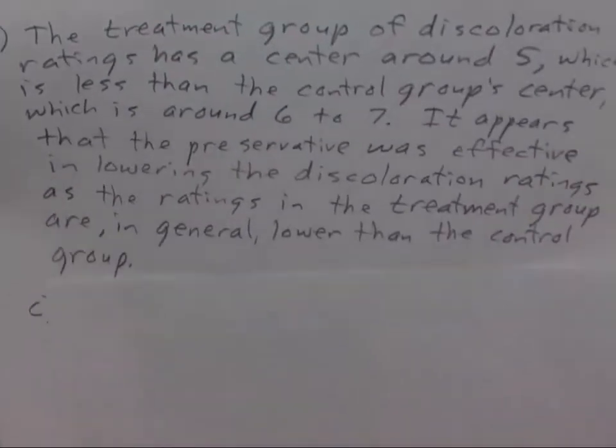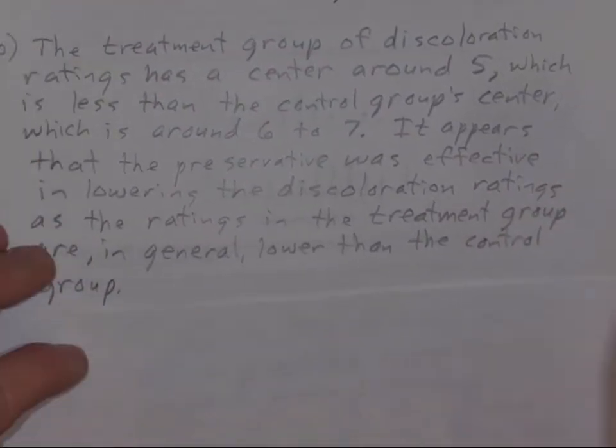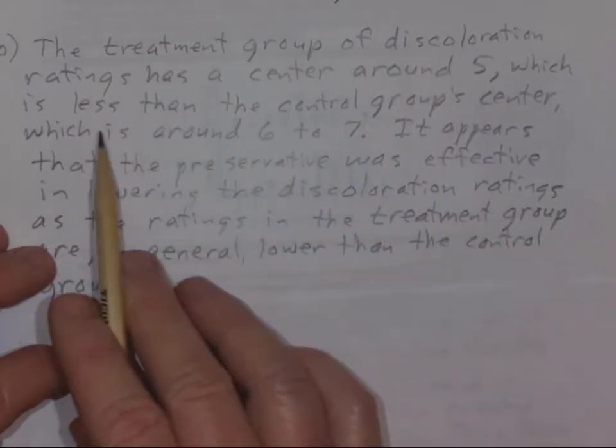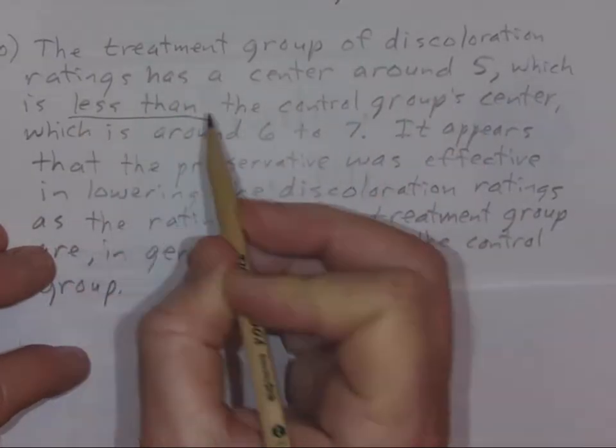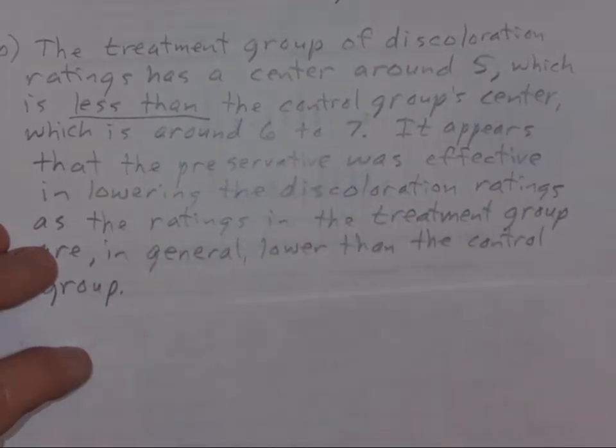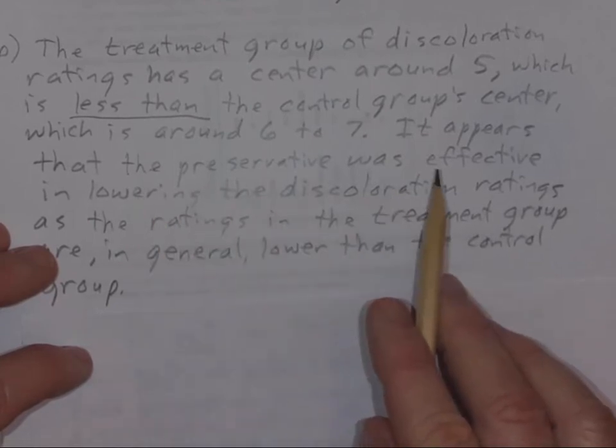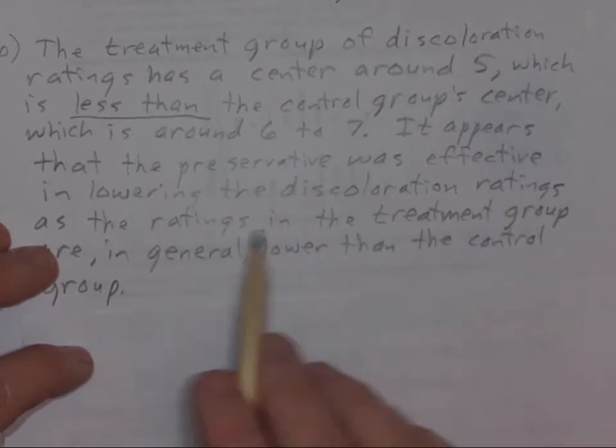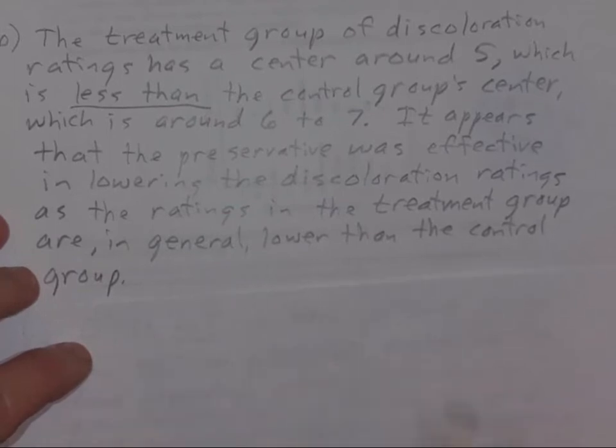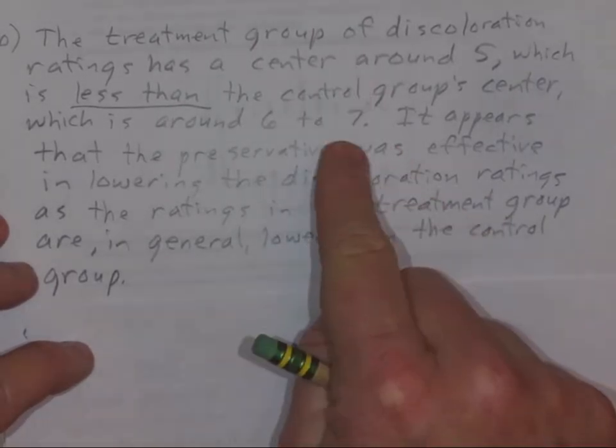And so this is the way I worded that. The treatment group of discoloration ratings has a center around five, which is less than the control group center, which is around six to seven. It appears, and so answer the question that's being asked, it appears the preservative was effective in lowering the discoloration ratings as the ratings in the treatment group are in general lower than the control group.